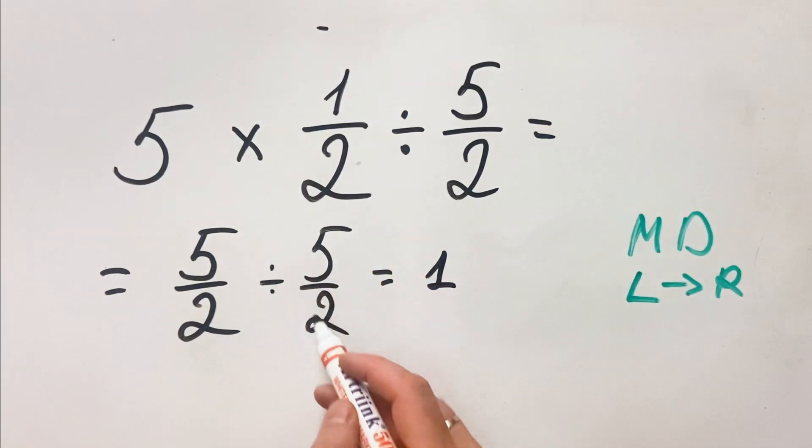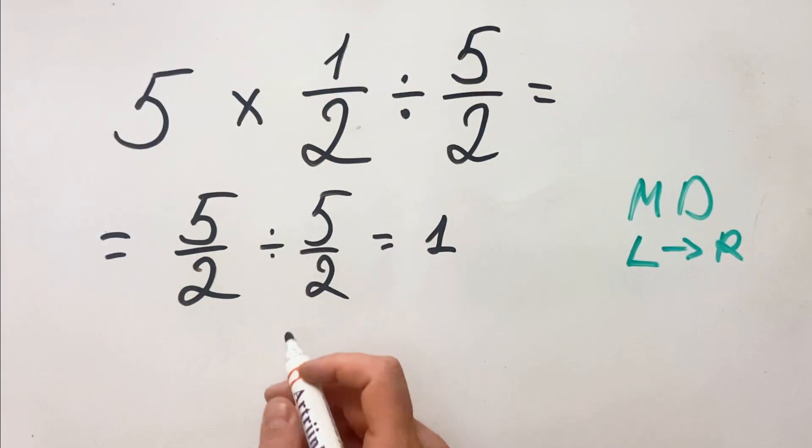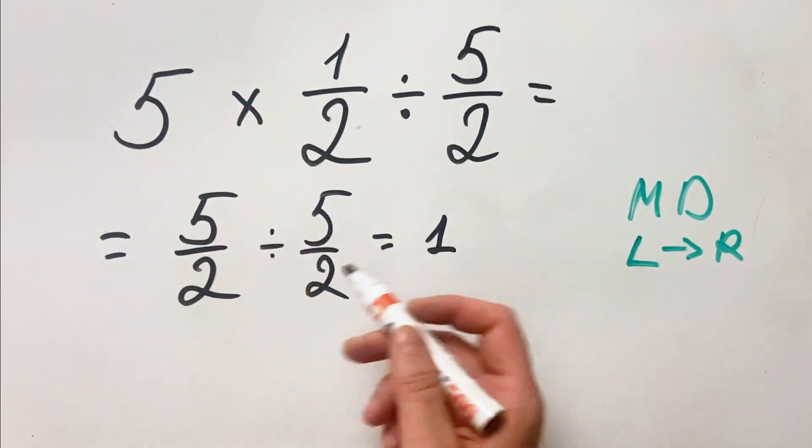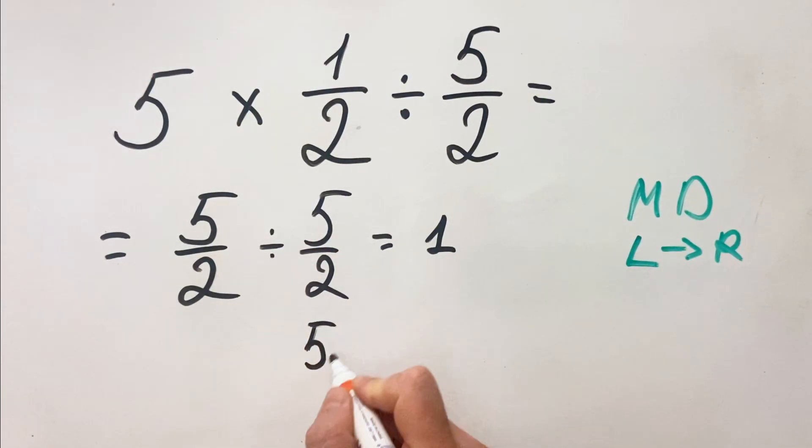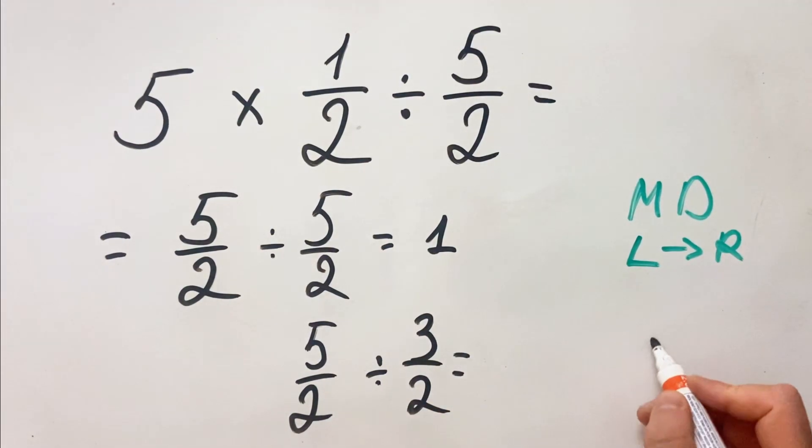But in case, let's say here you would have had a different number. What would you do? For example, let's say you would have 3 over 2. You have 5 over 2 divided by 3 over 2.